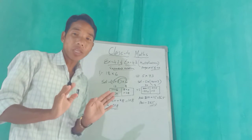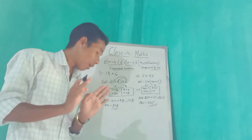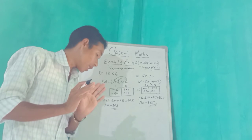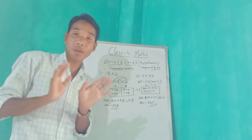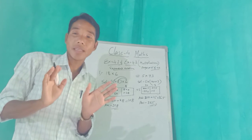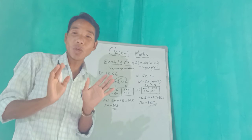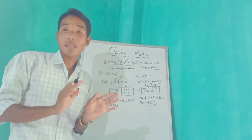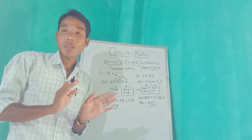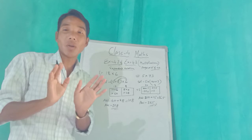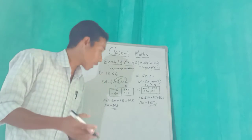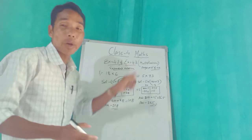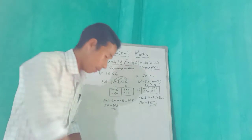Have you understood? If you have understood, try to do from number 3 to 15 by yourself at home. If you have any doubt you can ask. No doubt? Then we will go to the next exercise: Exercise 4.3.